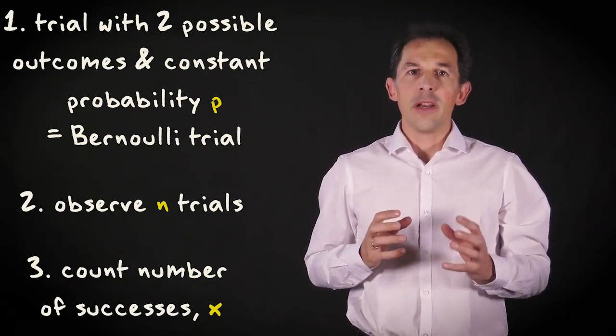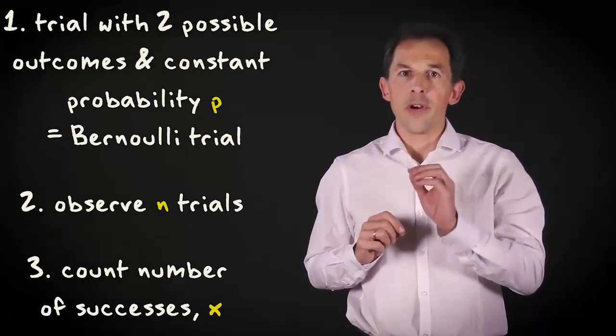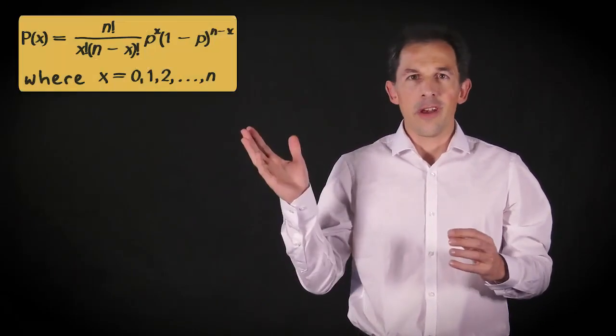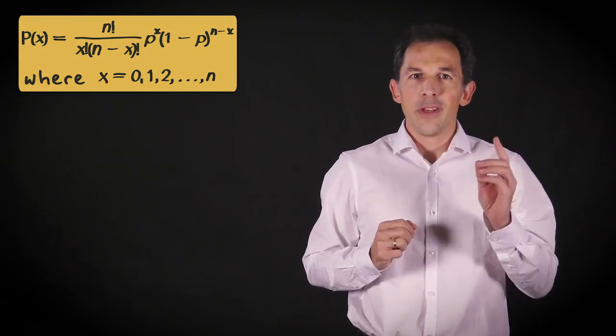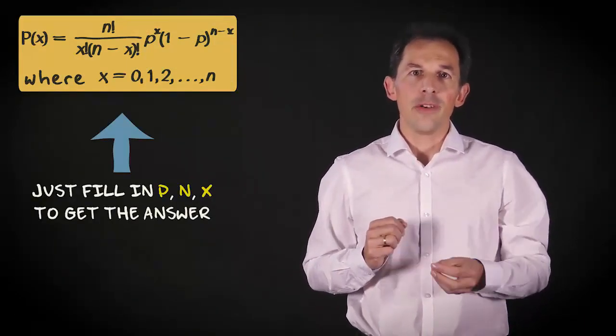These three elements are combined in one formula that gives the probability of getting a particular number of successes with n trials. The formula is shown here. You can just fill in the three numbers n, x and p to get the answer.